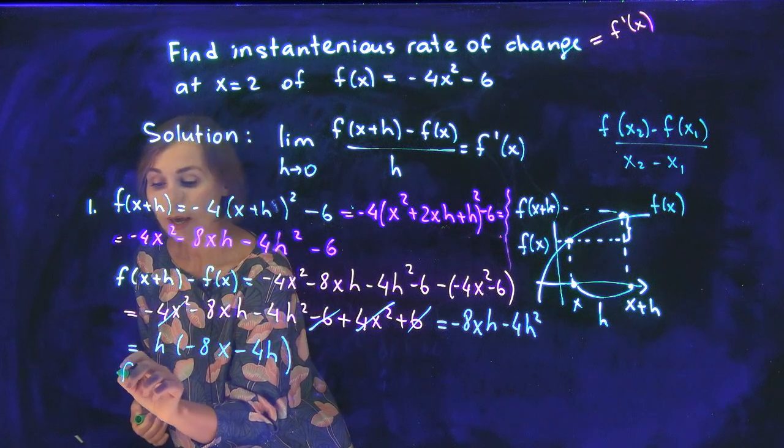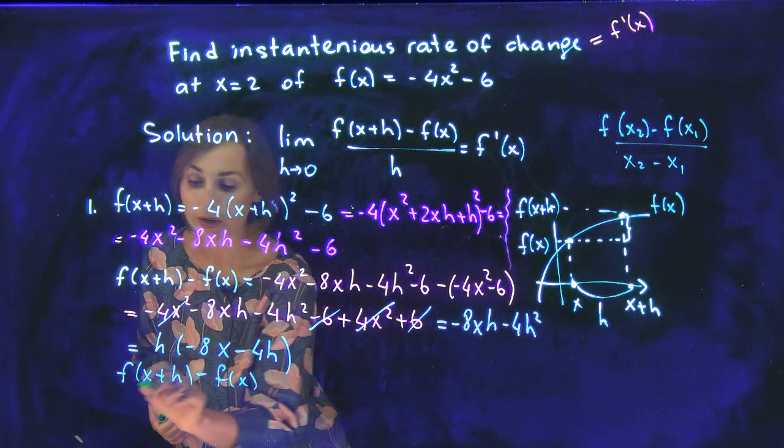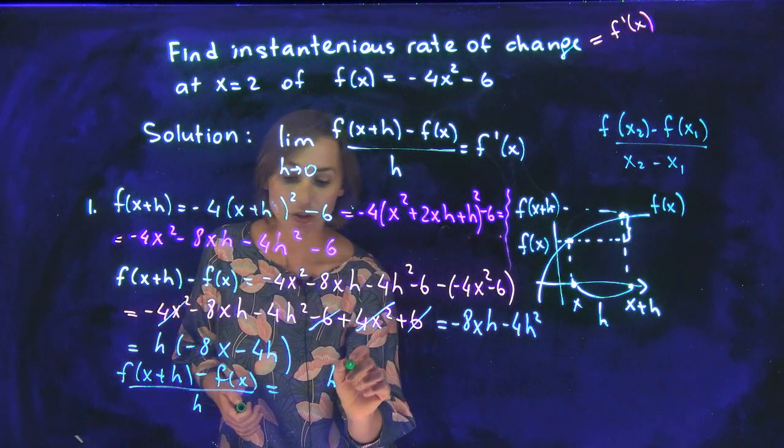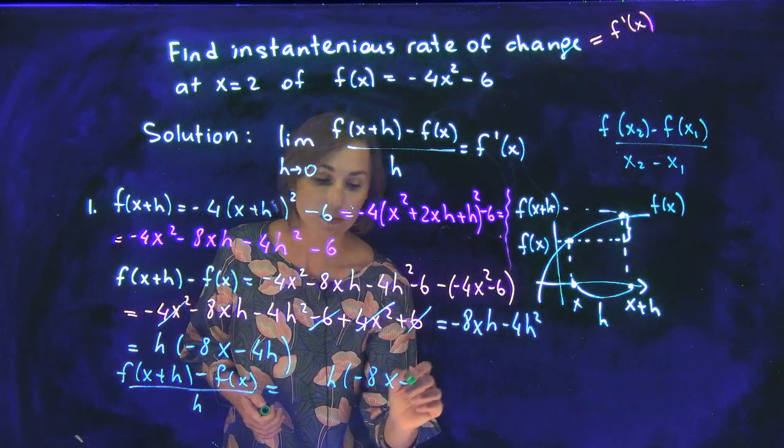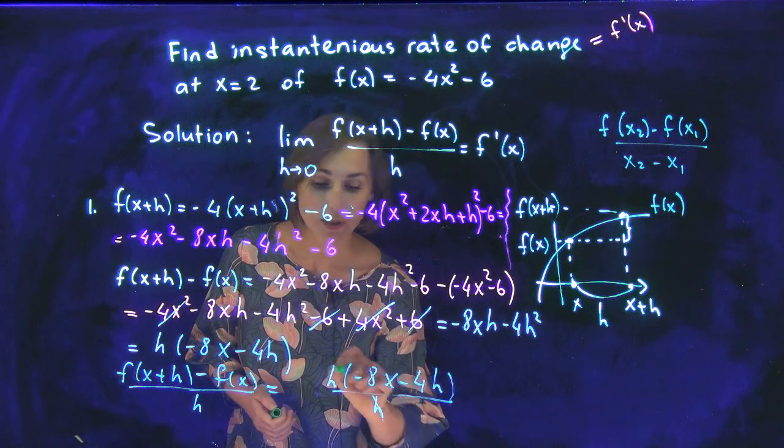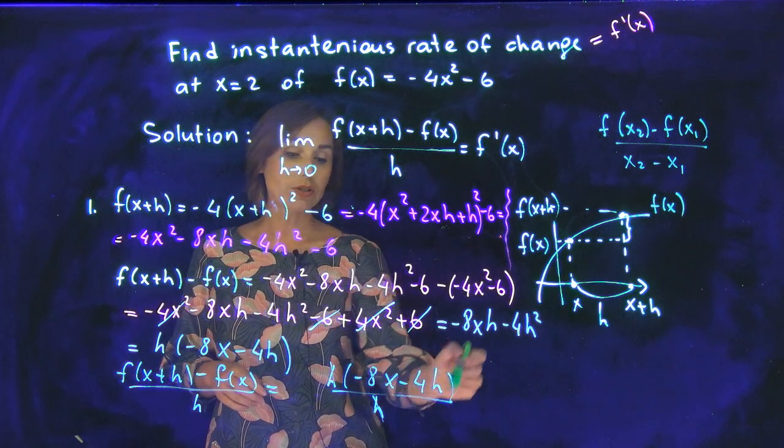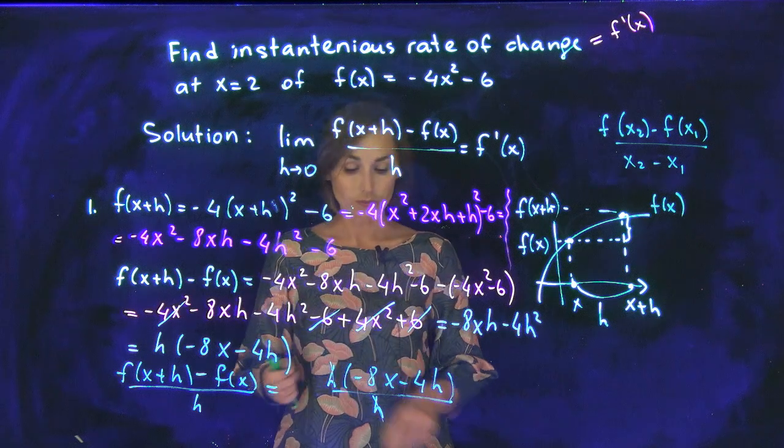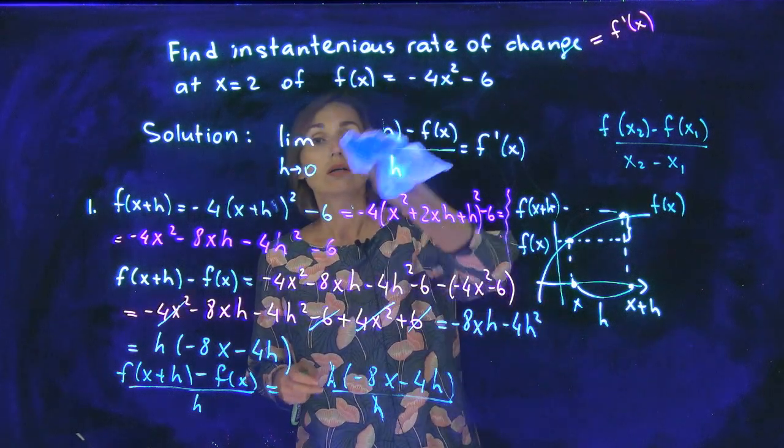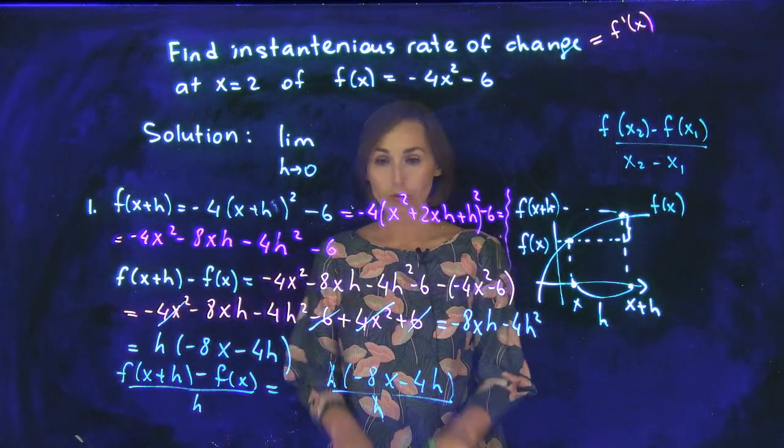So let's do f at x plus h minus f at x over h now. It will be h times negative 8x minus 4h. You divide it by h, h will be cancelled out. So the whole difference quotient is here. It is negative 8x minus 4h. I do not have space here. So let me use this part of the board to do the limit of the difference quotient.